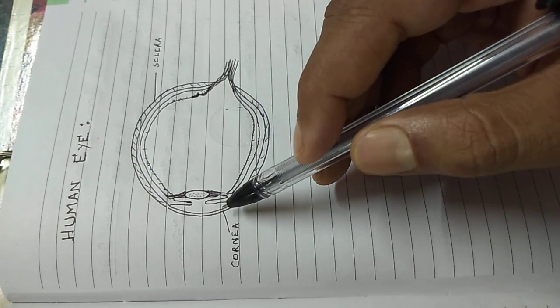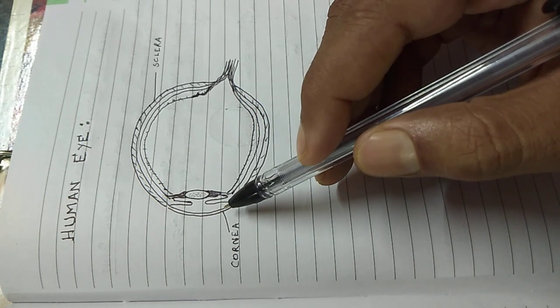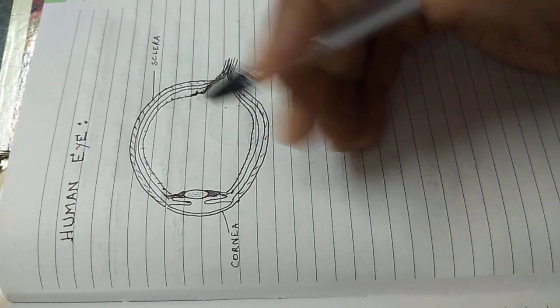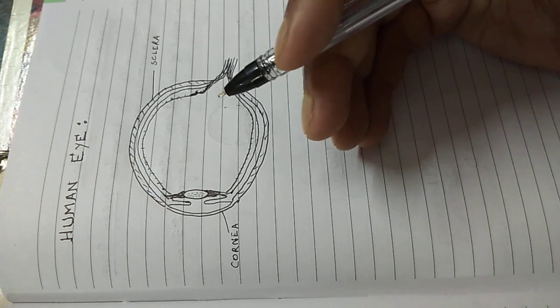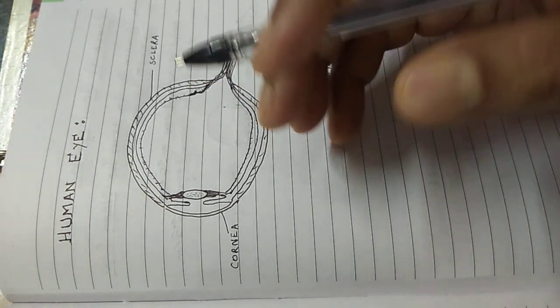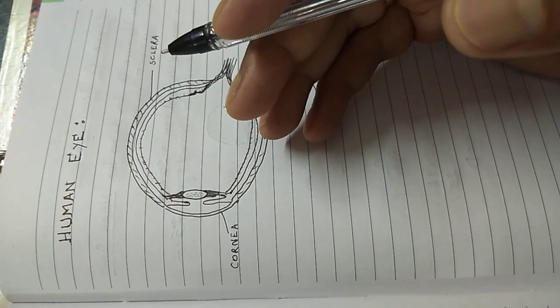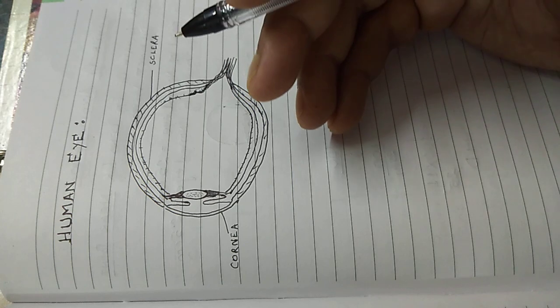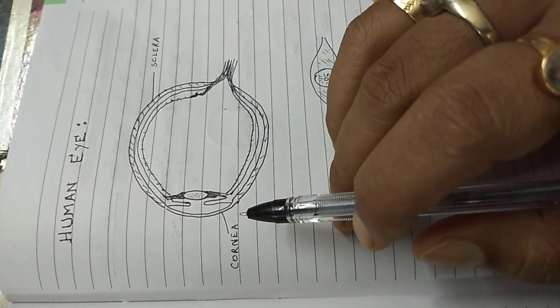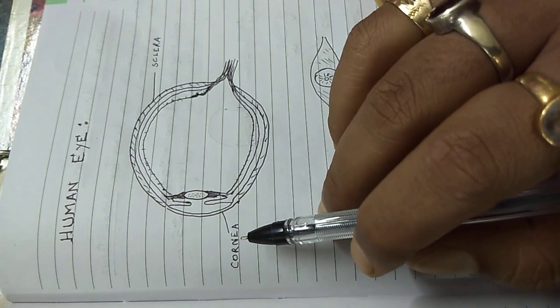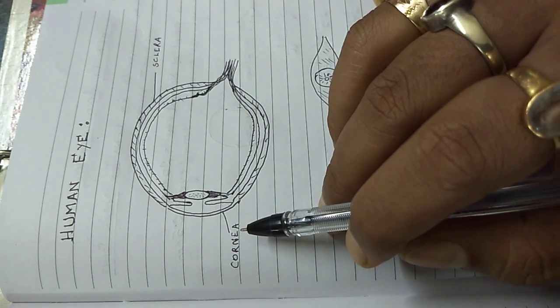It can be easily donated because cornea does not have any blood vessels and therefore there is no need for matching of blood or risk that any disease can come through it. Of course, if the person dies from diseases like HIV/AIDS and rabies or tetanus, then the cornea cannot be donated.